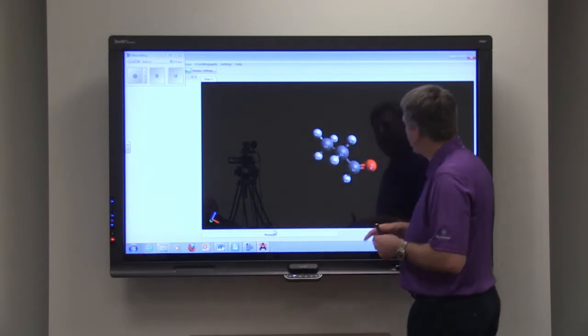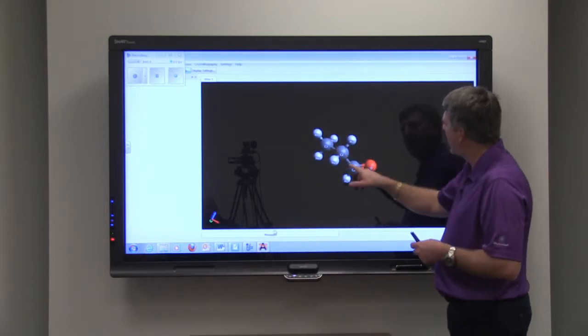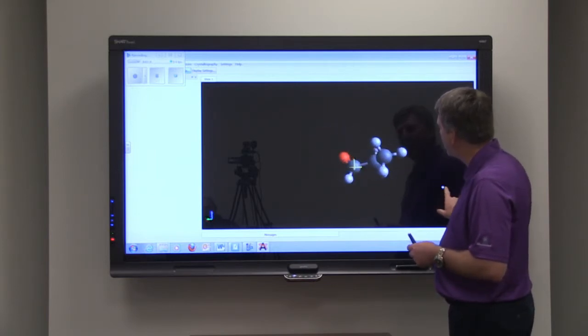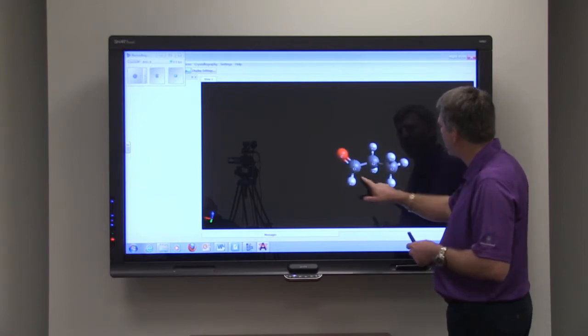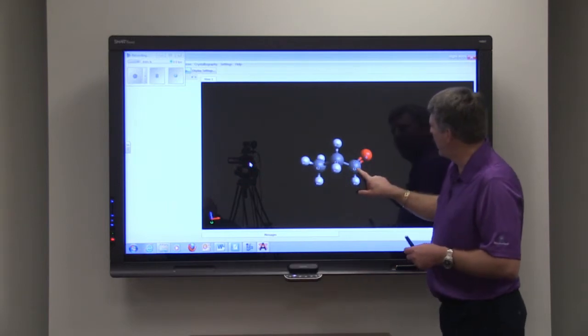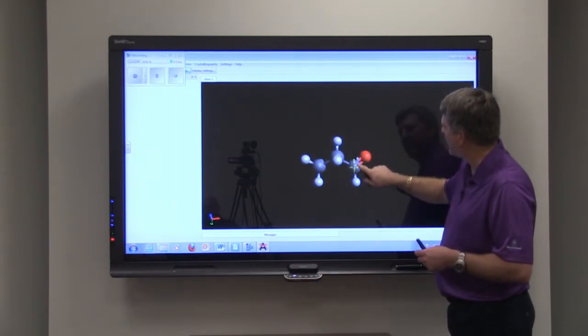So the third one, of course, would be propanal, and you see we have our three carbons, and you see that the double bonded oxygen is attached to the first carbon. So here's the first carbon, and we can flip the molecule this way, and you see this is still the first carbon, and there is our double bond.